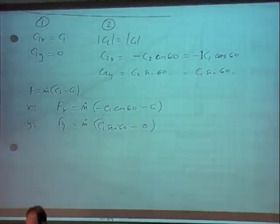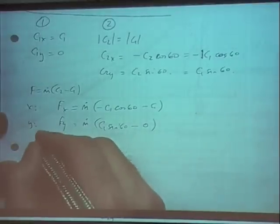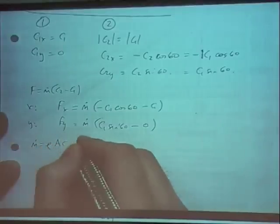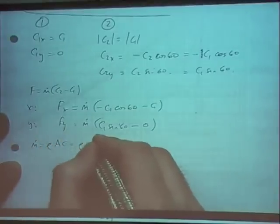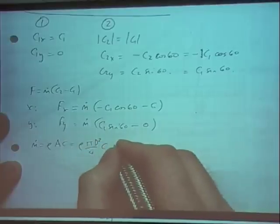Now we know what c1 is, so we have to calculate that out. m dot equals rho times a times c, so that will be rho pi d squared upon 4 times by c.